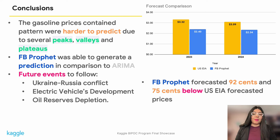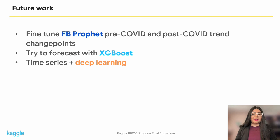The forecasting job was harder because of the diverse fluctuations in the trend. For instance, Facebook Prophet's forecasted gasoline prices were 92 cents and 75 cents below the U.S. Energy Information Administration figures for 2023 and 2024. As scientists, stakeholders, or average people, we need to follow future developments such as the Ukraine-Russia war, electric car development, and the gradual depletion of oil reserves.